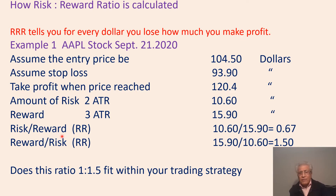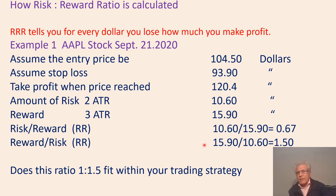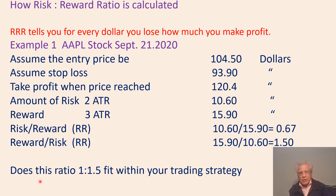A ratio of 0.67 means for every dollar you gain, you risk 67 cents. The reward-to-risk ratio is $15.90 over $10.60, which is $1.50 — meaning for every dollar you risk, you take $1.50 in profit. Does this 1-to-1.5 ratio fit your trading strategy? That's for you to decide. Mark it down and see what happens in the long run to know whether you'll be successful.